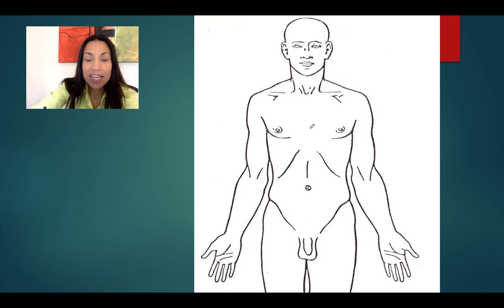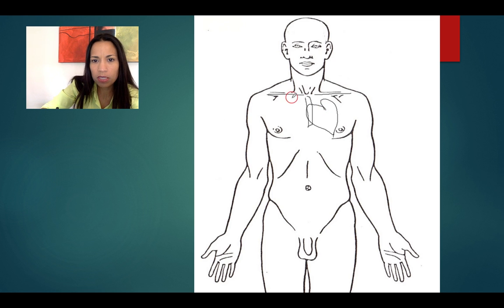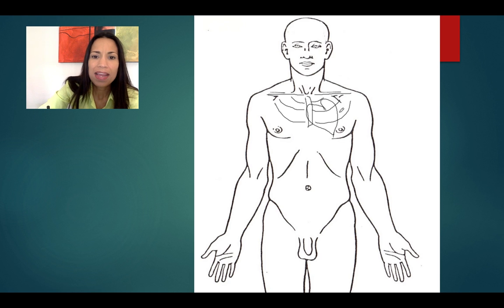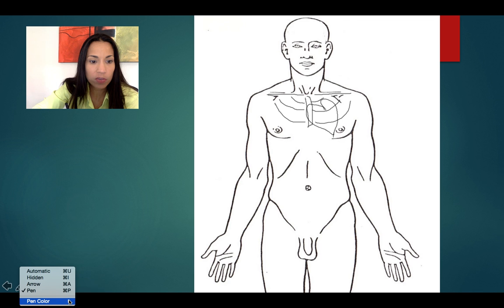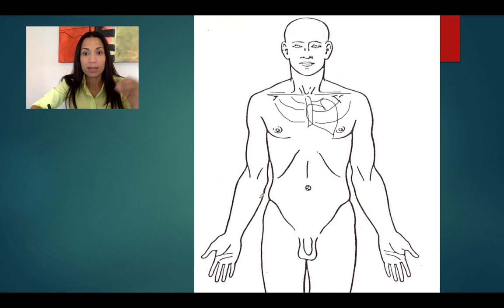Let's describe the veins draining the upper limb. We have the clavicles as points of reference, here is the sternum, and about here is the heart, so the ribs are like this. Now we're going to describe two sets of veins: a superficial and a deep group of veins draining the upper limb.